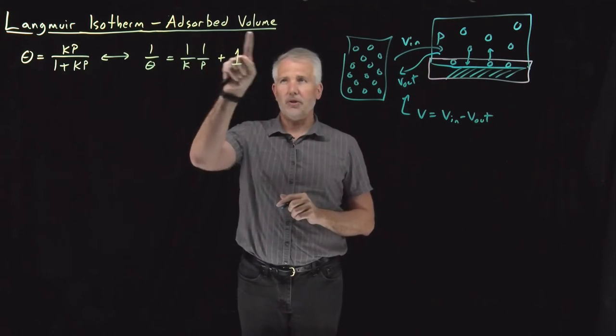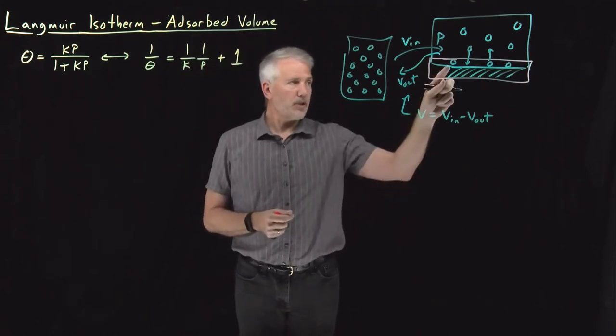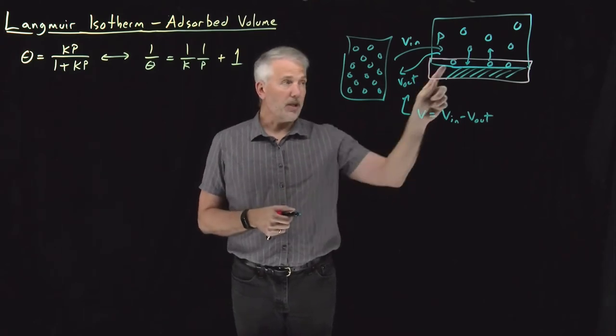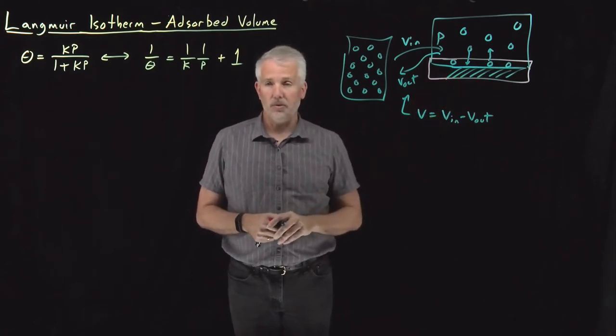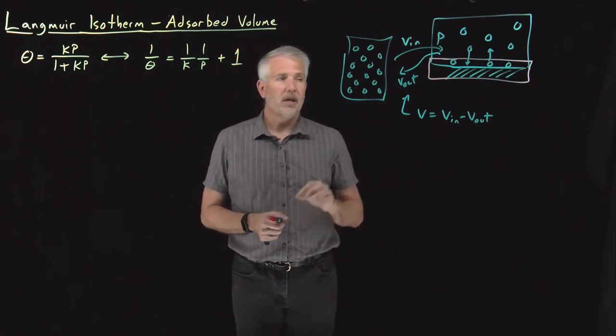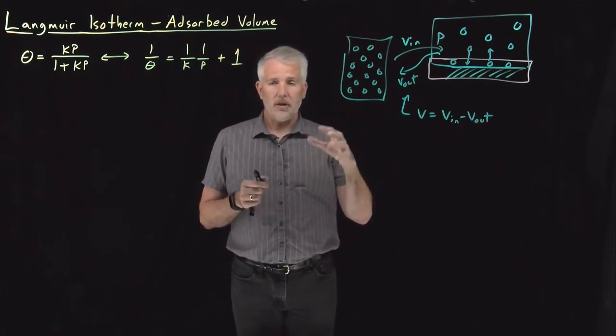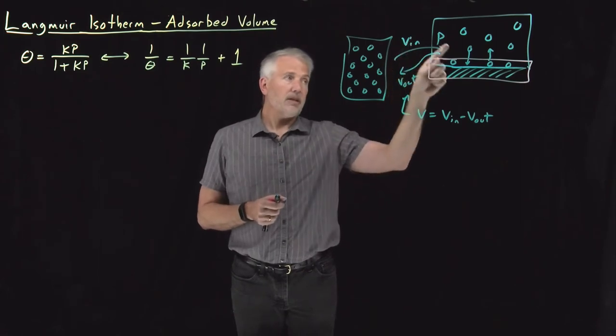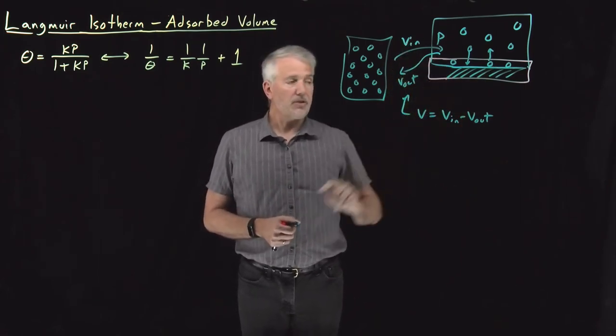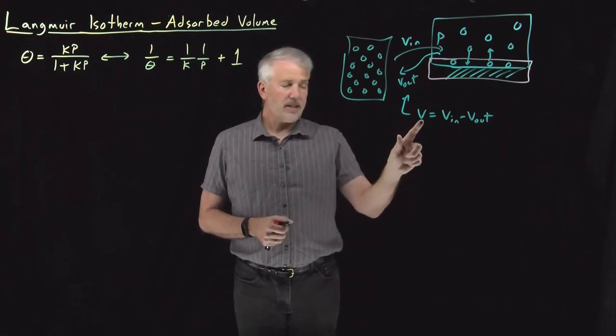So adsorbed volume sounds a little bit strange. Once the molecules are adsorbed, we don't think of them as occupying volume. They might have a surface area, they might be a number of molecules or a number of moles attached to the surface. So when we say adsorbed volume, what we really mean is the volume of gas that is equivalent to the number of adsorbed species attached to the surface. So that's the adsorbed volume.